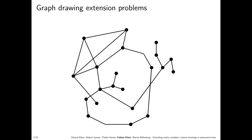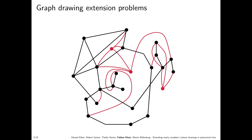Now let's consider graph drawing extension problems. In these problems one is typically given a partial drawing of a graph — say the black part — which is a partial drawing of the whole graph g we want to draw. We are then requested to add the missing parts of g, say the red parts. Crucially, we want to keep some properties of the drawing intact and also keep the sub-drawing we were given intact, so we draw the red parts on top without changing the original.